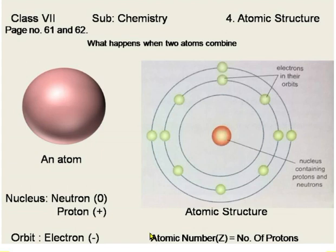One more term we need to know is atomic number. Atomic number is equal to the number of protons in an atom. The number of protons in an atom is always equal to the number of electrons in that atom.